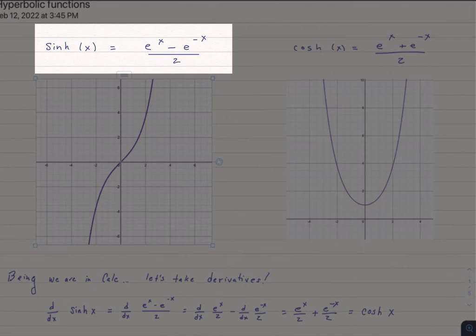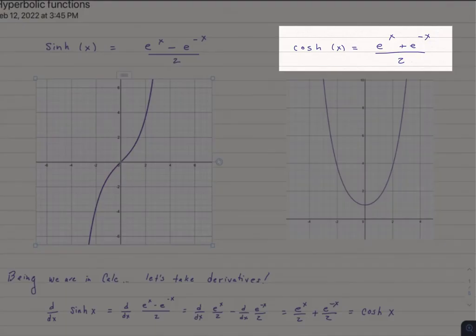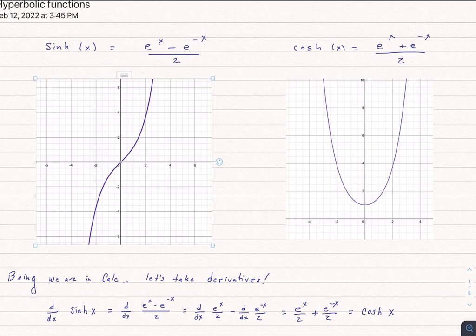So sinch is e to the x minus e to the negative x, all divided by 2. And cosh is simply e to the x plus e to the negative x over 2. And these are what the two graphs look like. These are just e to the stuff. It's not hard to graph these.